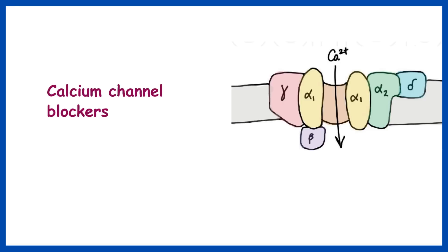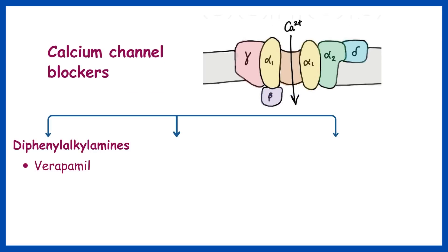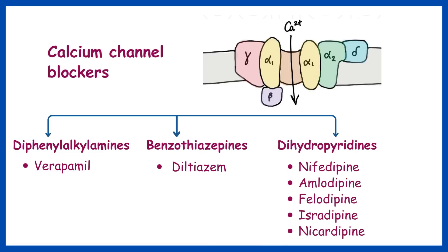The calcium channel blockers are divided into 3 chemical classes: Diphenylalkylamines, Benzothiazepines, and Dihydropyridines.